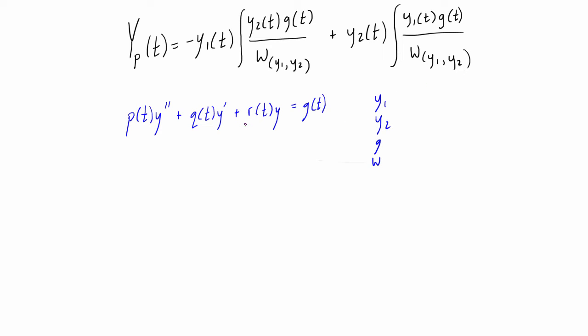So y1 and y2 are just parts of the complementary solution to the original differential equation and you can find that by converting the differential equation into a homogeneous one by setting g(t) equal to 0.